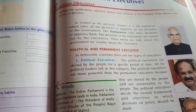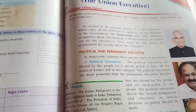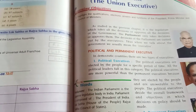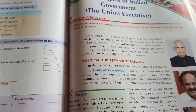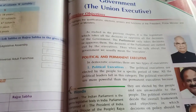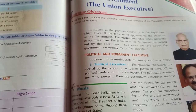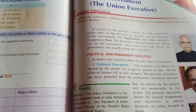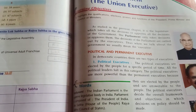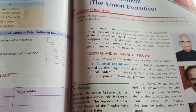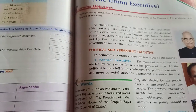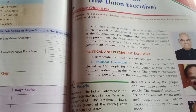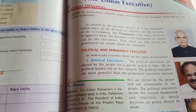Political executives are the people who are elected by the people. They are the leaders elected by the people in an election for a specific period of time. The political executives are chosen by the people and for a specific period of time, so all political leaders fall in this category. They are more powerful than the permanent executives because they are chosen by the people and are also answerable to the people.